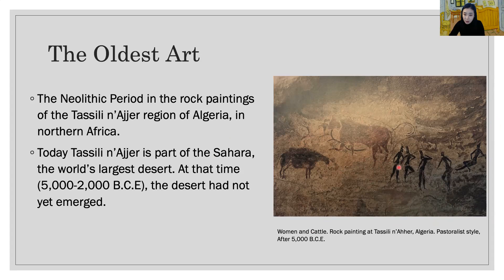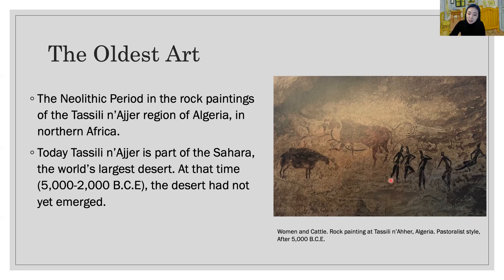Today Tassili n'Ajjer is part of the Sahara, the world's largest desert, but we can assume that at that time the desert had not yet emerged. The region was a vast grassland, home to animals and plants and the people we see depicted here. The figures depict the essence of human and animal bodies in actively posed, stylized silhouettes.